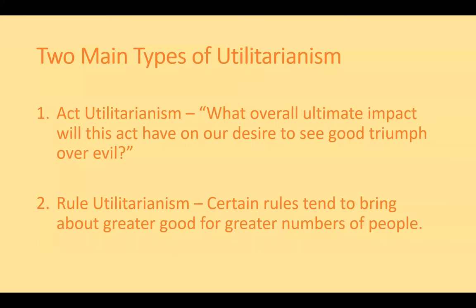There are two main types of utilitarianism. First is act utilitarianism: the question to answer is, what overall ultimate impact will this act have on our desire to see good triumph over evil? Then there is rule utilitarianism: the idea is that certain rules tend to bring about greater good for greater numbers of people. These rules are not justified because they are inherently right per se, but because they tend to produce more frequently desirable outcomes for greater numbers of people.